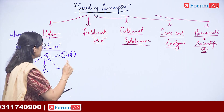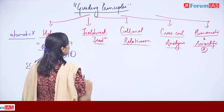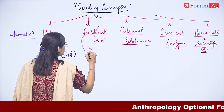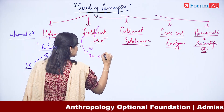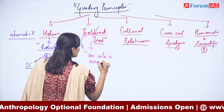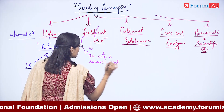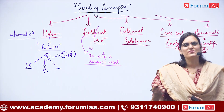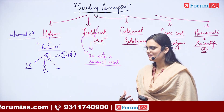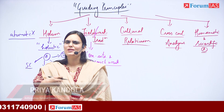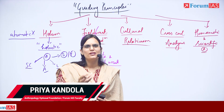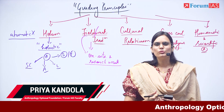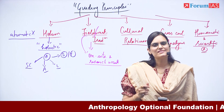The second principle is Fieldwork Tradition. 'Field' means going to a particular site and doing your research work firsthand. For example, if you want to study the Harappan civilization — what kind of artifacts were found, what kind of life they lived — you go to Harappa, Mohenjodaro, or Rakhigarhi, the largest site, and you record your observations. That is fieldwork tradition.